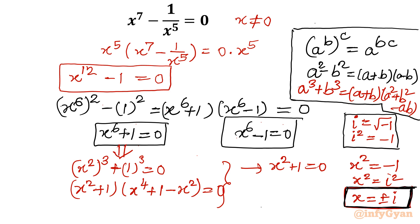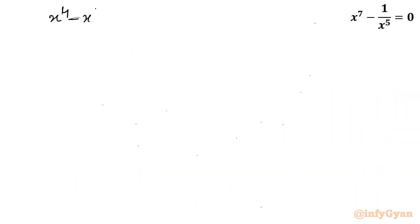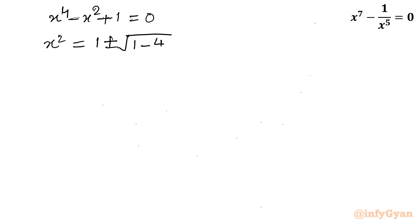Now let us consider the second equation — the quartic equation: x power 4 minus x square plus 1 equal to 0. This is quadratic in x square. Applying the quadratic formula with minus b plus minus square root of b square minus 4ac over 2a, we get 1 plus minus square root of negative 3 over 2, which is 1 plus minus i times square root 3 over 2. This is a complex solution.